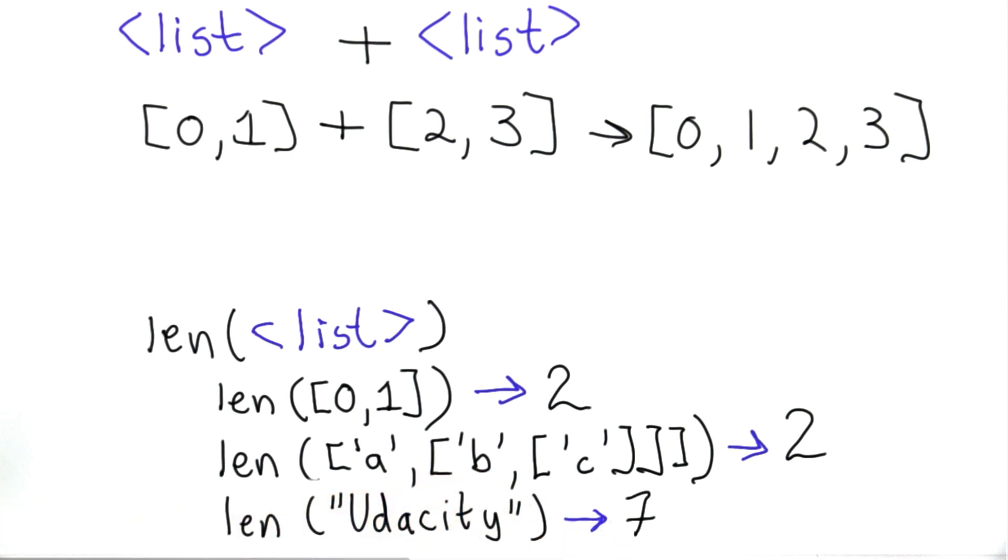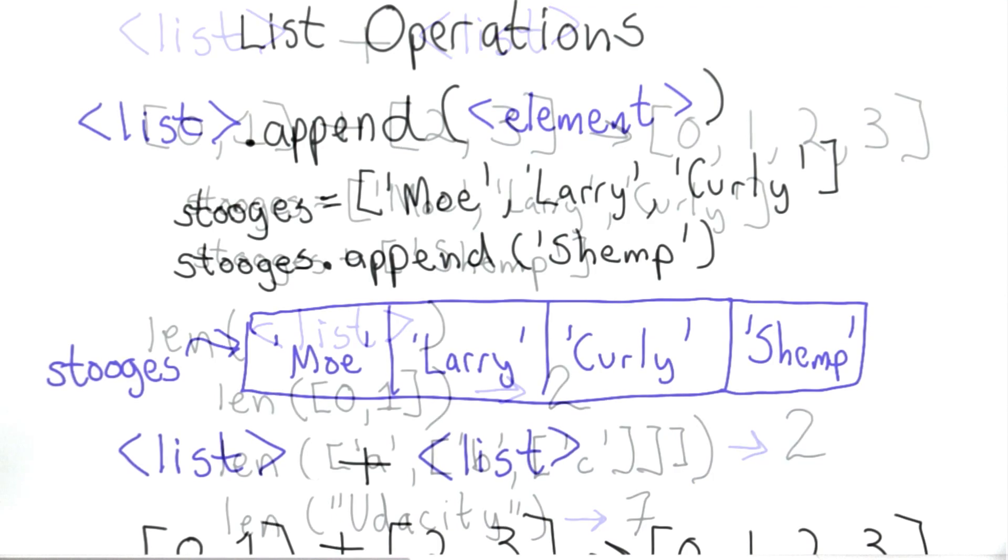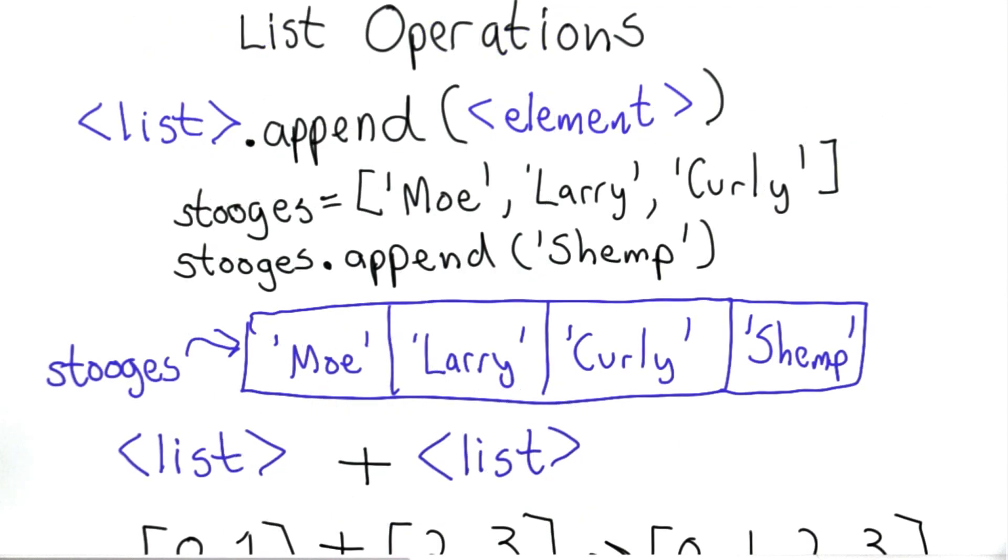So now we're ready for some quizzes to see how well you understand the three list operations we've introduced. The append operation, which is invoked on a list and takes an element as a parameter, and adds that element to the end of the list.